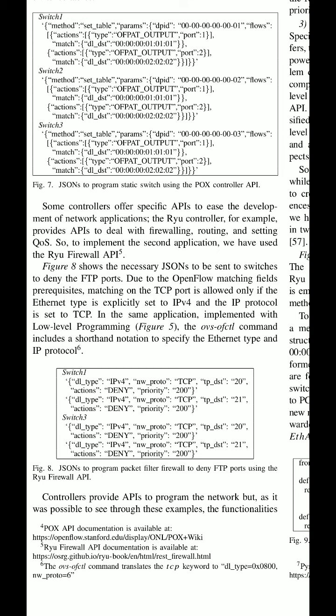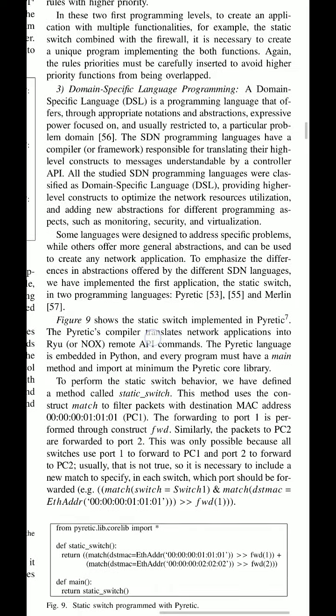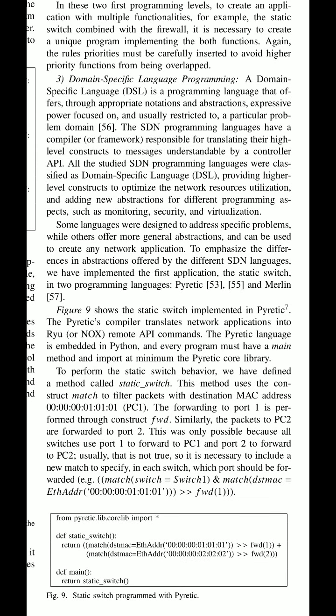Again, the rules priorities must be carefully inserted to avoid higher priority functions from being overlapped. So to avoid or overcome these shortcomings, we need domain specific programming languages. A DSL is a programming language that offers, through appropriate notations and abstractions, expressive power focused on and usually restricted to a particular problem domain.